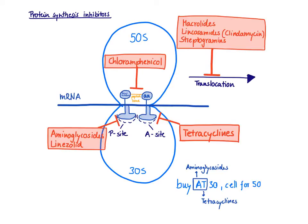To understand how these drugs work, we have to first review prokaryotic translation. What you can see here is the mRNA, which has been transcribed from the DNA of the bacteria and is read from the five prime to the three prime direction by the ribosomes — the workbench for translation. The ribosomes are made out of two subunits: the small subunit, the 30S, and the big subunit, the 50S. Within the small subunit you have two important binding sites for transfer RNA, represented here with half circles — the P site and the A site.